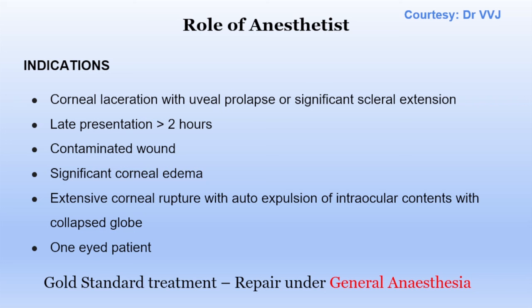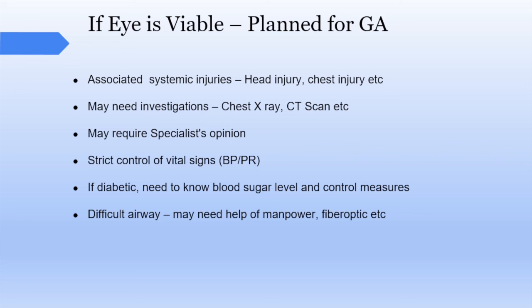General anesthesia is preferred. Specific indications include: corneal laceration with uveal prolapse or significant scleral extension, late presentation, contaminated wound, significant corneal edema, extensive corneal rupture with auto-expression of contents, and one-eyed patients. For GA planning, associated systemic injuries must be assessed; the patient may need chest X-ray and CT scan if there is head or chest trauma, and specialist opinion may be required. Strict control of vital signs is necessary, blood sugar levels must be managed in diabetic patients, and difficult airways require extra staff and fiber optic devices.